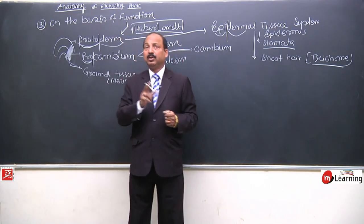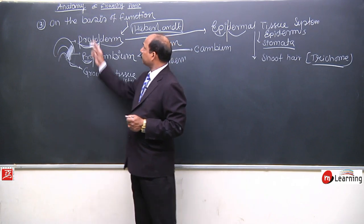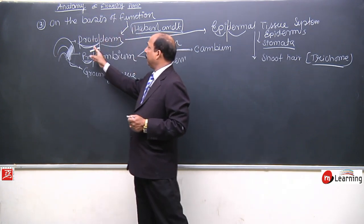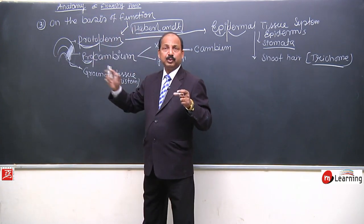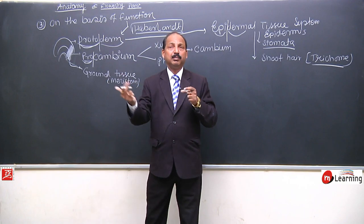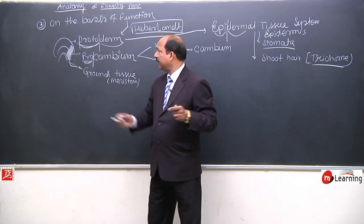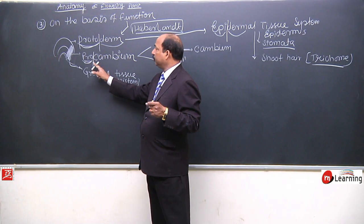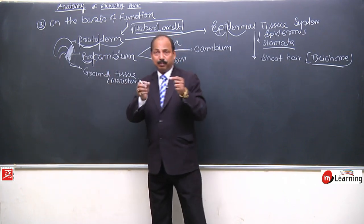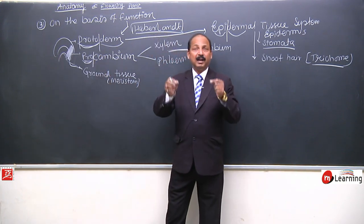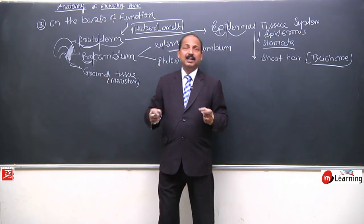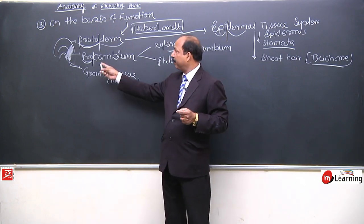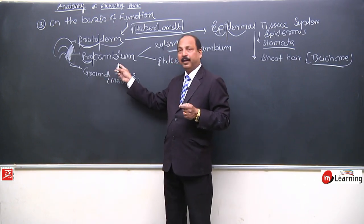So on the basis of function, the first meristematic tissue that formed the outermost portion was named protoderm. The second — which formed xylem and phloem (conducting tissues) in the plant — was named pro-cambium.